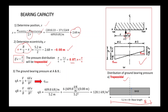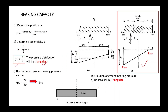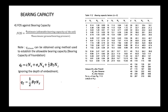In this case, e is less than B/6, so we have a trapezoidal distribution. The q_max occurs at the toe. The equation for q_max uses the total vertical forces from the table, divided by the base size B, plus or minus (6 * e / B²) times the force — substituting the eccentricity e and base B.